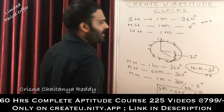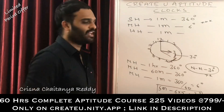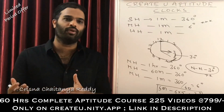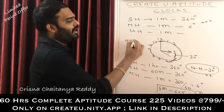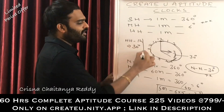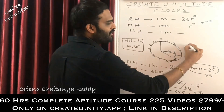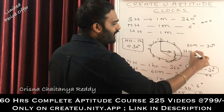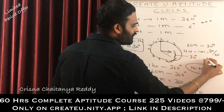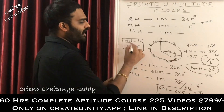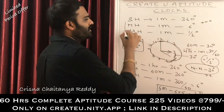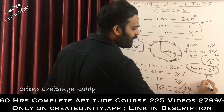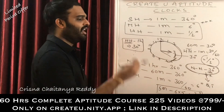Now for the hour hand: imagine the time is 3 o'clock and it has to become 4 o'clock. The hour hand moves from 3 to 4, so in one hour it covers 30 degrees. That means in 60 minutes it covers 30 degrees, so in one minute the hour hand covers 30 ÷ 60 = 0.5 degrees. So another very important piece of information: the hour hand covers half a degree per minute. Remember — number-to-number gap is 30 degrees.